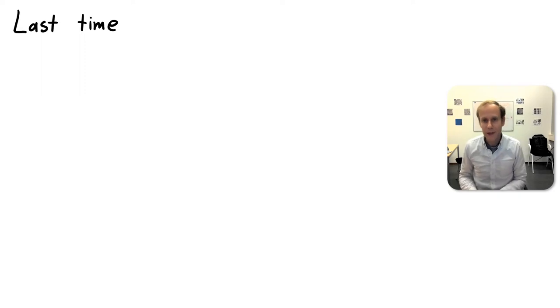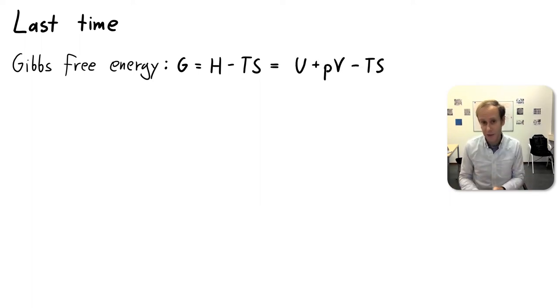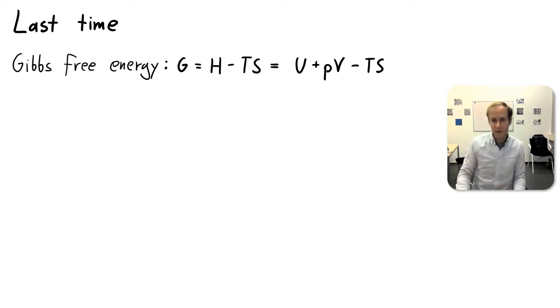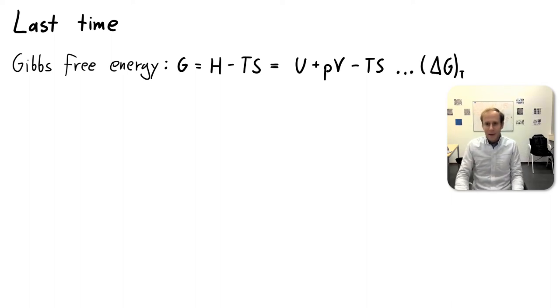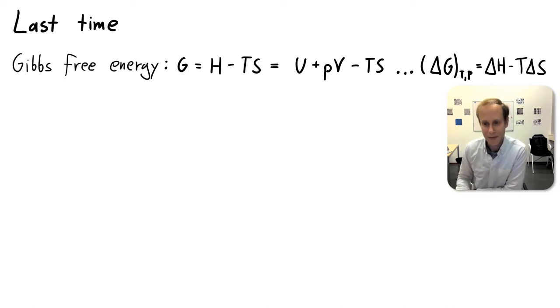Before we get started, let's do a brief recap of what we did last week. The Gibbs free energy G was introduced. Its definition is the enthalpy H minus the temperature times the entropy. Enthalpy H itself is defined as the internal energy plus PV. Plugging this in gives another equation for the Gibbs free energy. The change of G at constant temperature and pressure is calculated as delta H minus T delta S.